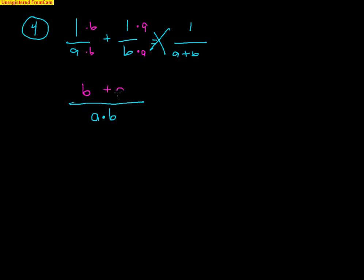Some kids will then try to cancel out the A's and B's from that result. Once again, you can't — you can only cancel through multiplication. Yes, this A is being multiplied by B on the bottom, but on top it's addition. So you cannot cancel those values out. Hopefully that makes sense.